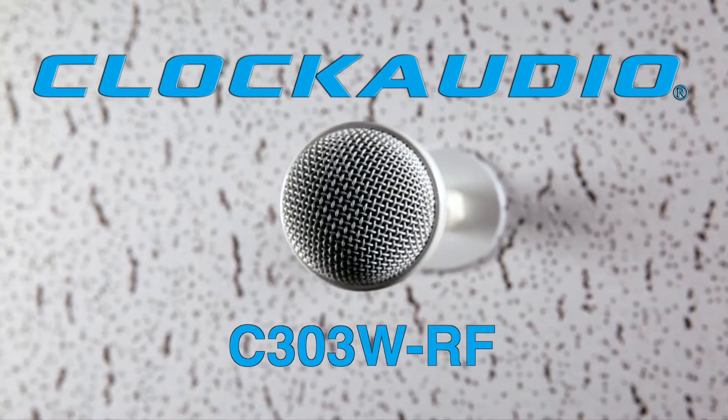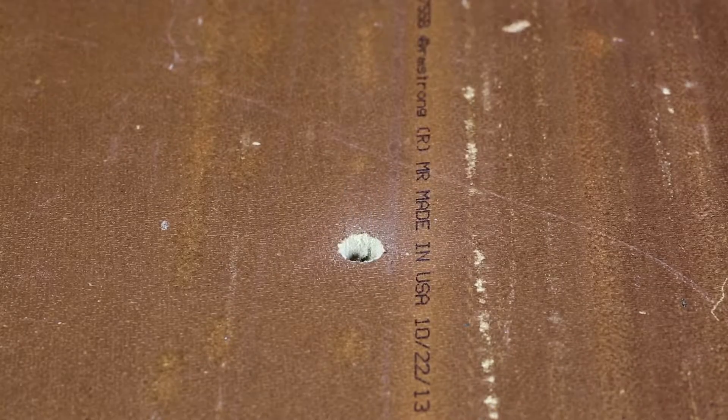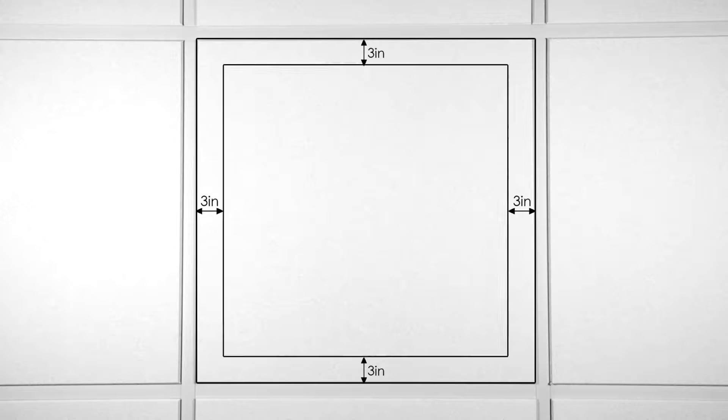After you've determined the location of the hanging microphone, make a 5/8 of an inch hole through the ceiling material. If you are cutting in a suspended ceiling tile, be sure to cut out the hole at least 3 inches from the tile rails.